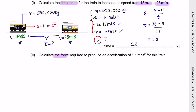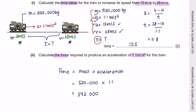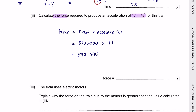Calculate the force required to produce an acceleration of 1.1 m/s² for this train. Using F = ma: F = 520,000 × 1.1 = 572,000 N. Rounded to two significant figures, that is 570,000 N. Don't forget to include the unit, which is newtons.